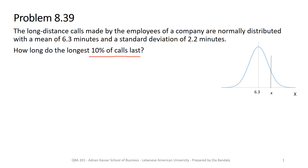On the curve, the question 'how long' means we are asking for x — we don't know x. What we know is that 10%, which is the area, is equal to 0.1. This is similar to the uniform distribution problem where we wanted to find the top 10% time. Here we cannot do the same simple area calculation, but it's not going to be complicated either. We're going to use the Z table.